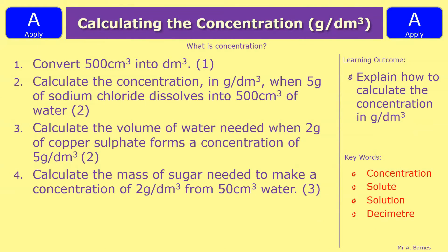Now let's have a look at four practice questions. Question 1: convert 500 centimetres cubed into decimetres cubed (1 mark). Question 2: calculate the concentration in grams per decimetre cubed when 5 grams of sodium chloride dissolves in 500 centimetres cubed of water — remember to divide that volume by 1,000. Question 3: calculate the volume of water needed when 2 grams of copper sulphate forms a concentration of 5 grams per decimetre cubed. Question 4: calculate the mass of sugar needed to make a concentration of 2 grams per decimetre cubed from 50 centimetres cubed of water — remember to convert that volume. Pause the video and we'll see how you've done in a minute.